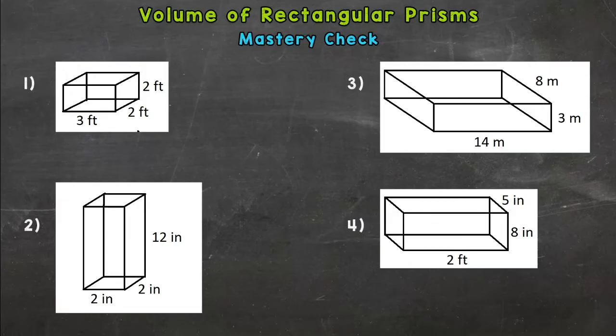All right, welcome back. I'm assuming you have those four problems done, so let's go ahead and see how you did. For number one, remember we have two different formulas to find the volume of rectangular prisms. I'm going to use volume equals length times width times height, and then fill in my dimensions. So we have a length of 2 times the width of 3 times the height of 2.